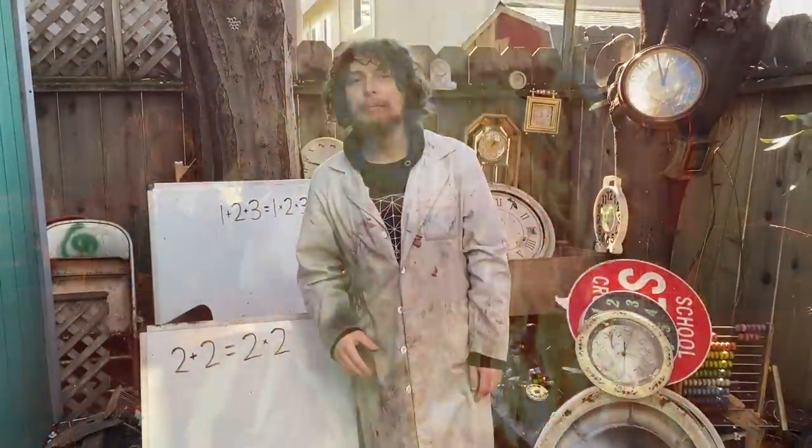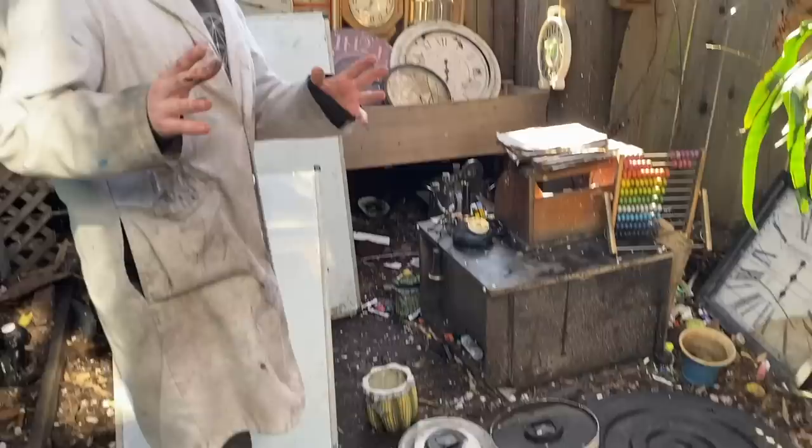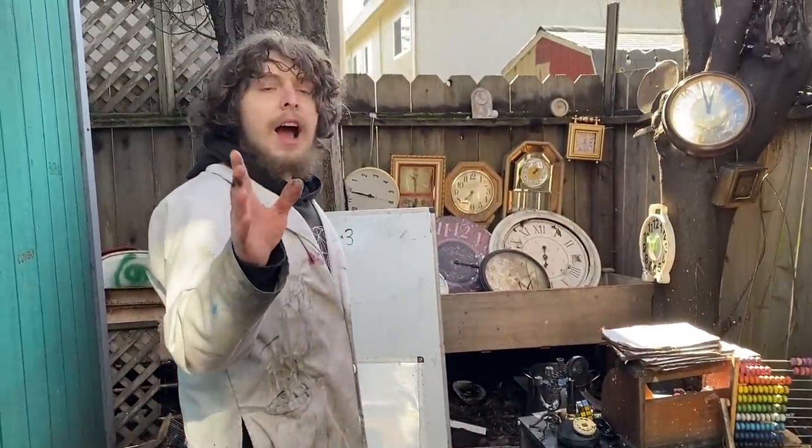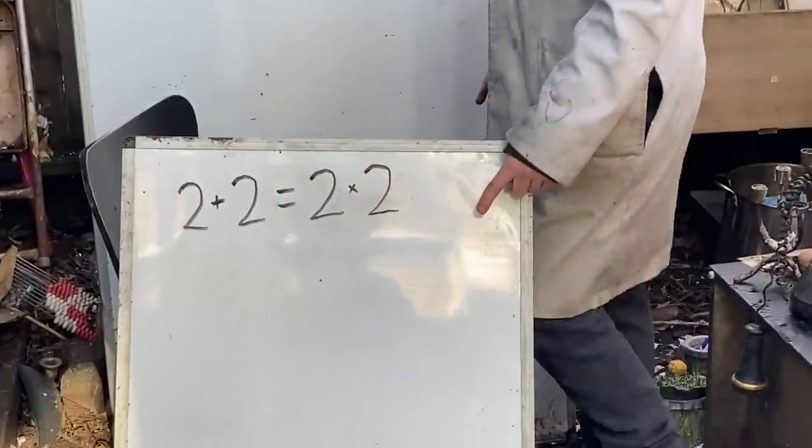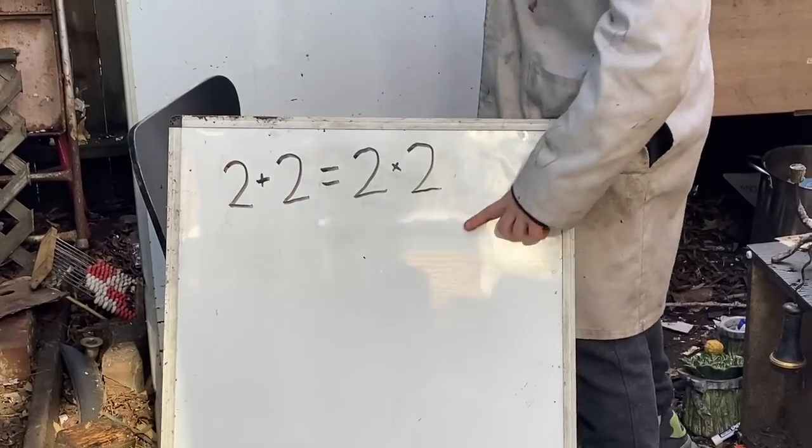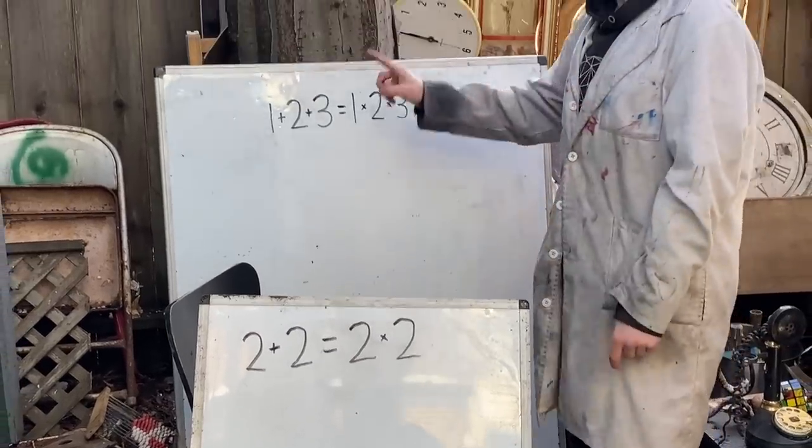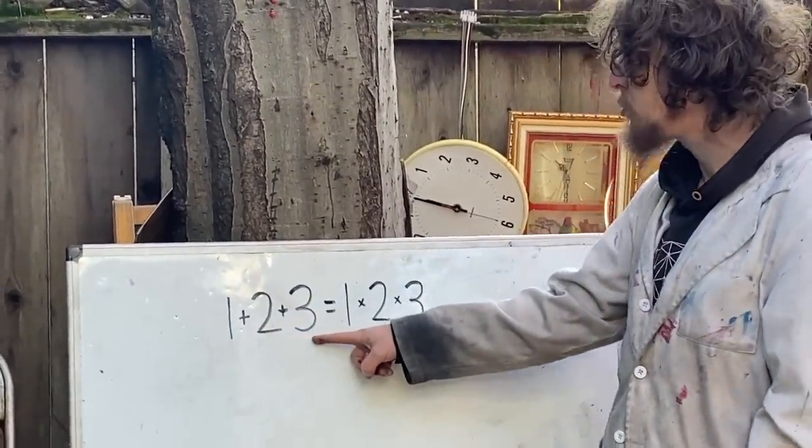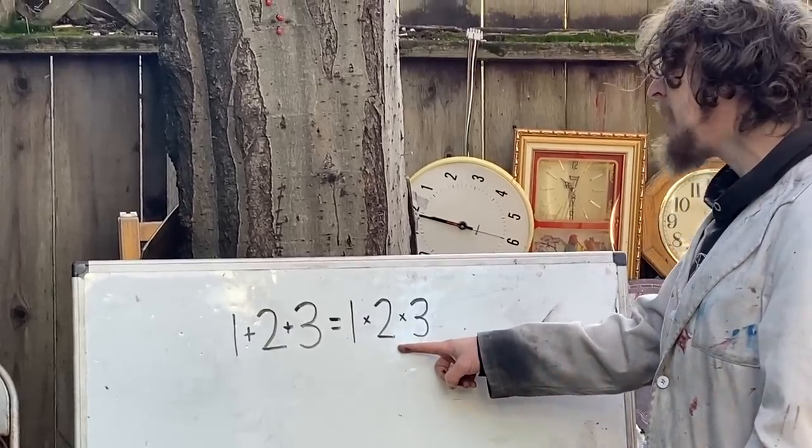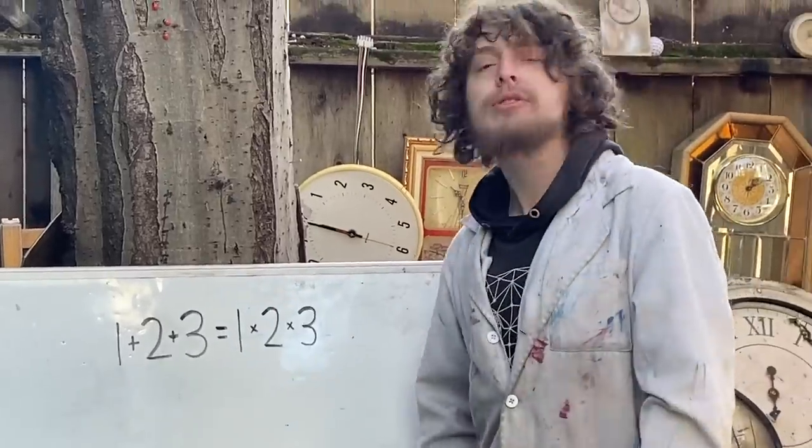Hey folks, welcome back to Combo Class. I'm your teacher Demotro, and today I wanted to tell you about how this equation that you may recognize, that 2 plus 2 equals 2 times 2, is secretly connected to this equation, that 1 plus 2 plus 3 is equal to 1 times 2 times 3, and not only are they connected, but they're members of an infinite family of equations.